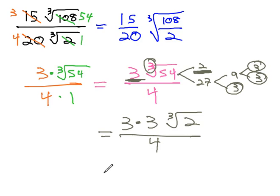And so, for our final answer, 3 times 3 is 9, cube root of 2 over 4.